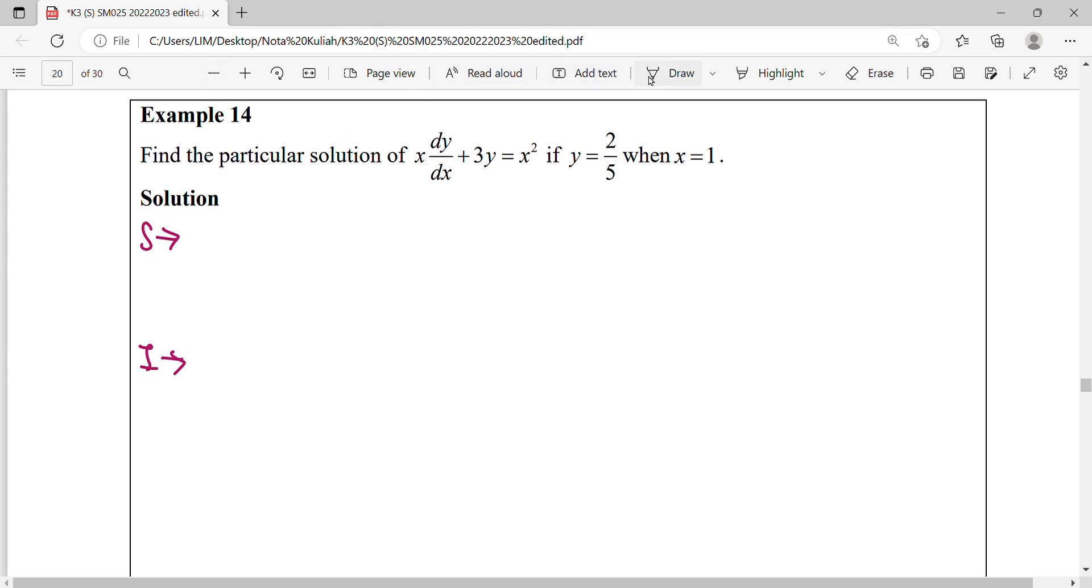Find the particular solution for this differential equation if y equals 2/5 and x equals 1. When we're given values, we can find our particular solution by determining the constant c. We have one more step after we get the general solution.